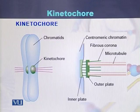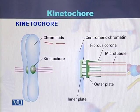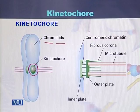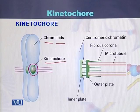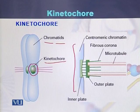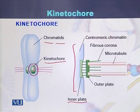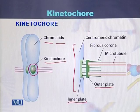Looking at the diagram of the kinetochore, we can see the chromatids of the chromosome. In the center is the centromere, and within the centromere is a specific point called the kinetochore. On the centromere there is an inner plate, while the outer plate is formed by the microtubules which are attached to the kinetochore.